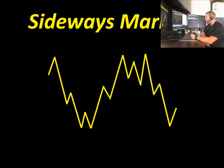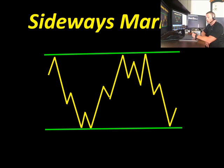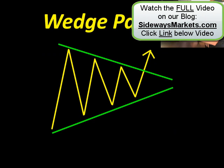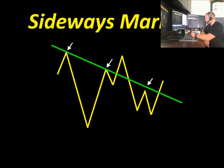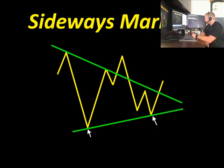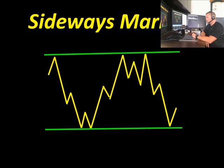Now what about a sideways or flat trend line? In a choppy market like this, we can draw a trend line from the highs — high to high — and also draw a trend line at those lows. This defines what we call a flat trend, a sideways market. There's your top, and there's your bottom. Real easy stuff, not too complicated.